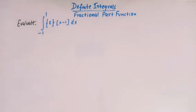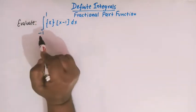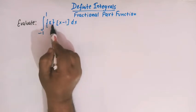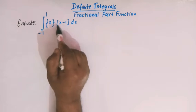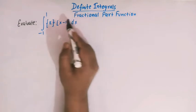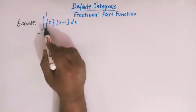Hello viewers. In today's class we are going to discuss yet another very important and conceptual problem from definite integrals involving fractional part function and greatest integer function. So here we have to solve this integral from minus 1 to 1, where our integrand is the fractional part of x times the greatest integer of x minus 1. We will make use of the definitions of fractional part function and greatest integer function.